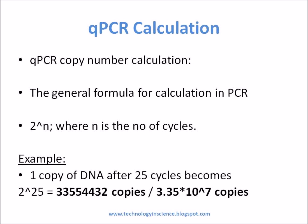In PCR, one copy of the template becomes two after the first cycle. The template copy number keeps accumulating as the number of cycles proceeds. It is given by a general formula: 2 to the power n. After 25 cycles, one copy of the template becomes 33,554,432 copies, or 3.35 × 10 to the power 7 copies.